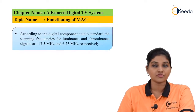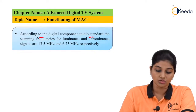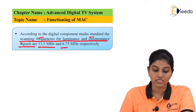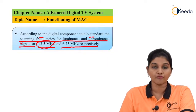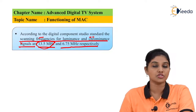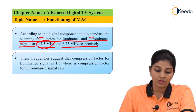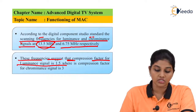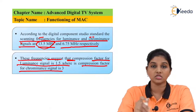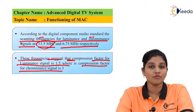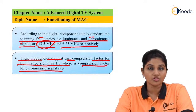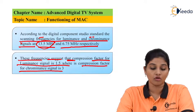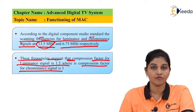According to the digital component studio standard, the scanning frequencies for luminance and chrominance signals are 13.5 MHz and 6.37 MHz respectively. Based on these frequencies, the compression factor for luminance in the MAC standard is 1.5, and the compression factor for chrominance is 3. Compression factor refers to the amount by which compression is performed on the video or audio signals.